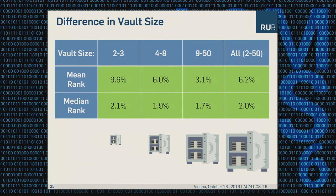We also tested different vault sizes. The bigger the vault is, the better for an attacker to distinguish real from decoy. For vaults with only 2 to 3 passwords, the mean value is 9.6%. For bigger vaults with 9 to 50 passwords, the mean value is 3.1%. And for all vaults combined, it's 6.2%.